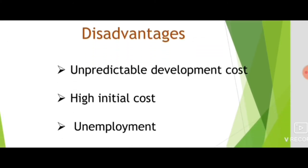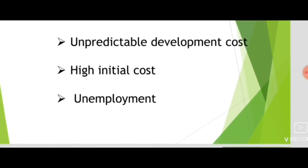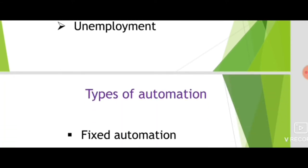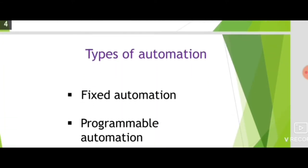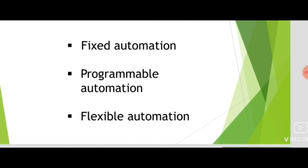Disadvantages of automation include unpredictable development costs, high initial cost, and unemployment. Types of automation are: fixed automation, programmable automation, and flexible automation. Now I hand over to my friend Tanuja.